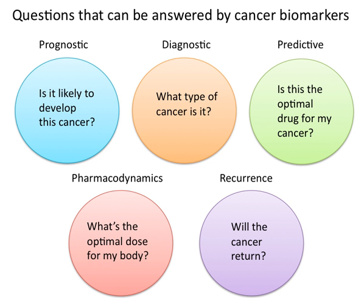Cancer biomarkers can also offer value in predicting or monitoring cancer recurrence. The Oncotype DX breast cancer assay is one such test used to predict the likelihood of breast cancer recurrence. This test is intended for women with early stage (stage 1 or 2), node-negative, oestrogen receptor-positive invasive breast cancer who will be treated with hormone therapy. Oncotype DX looks at a panel of 21 genes in cells taken during tumor biopsy, and results are given as a recurrence score indicating the likelihood of recurrence at 10 years.